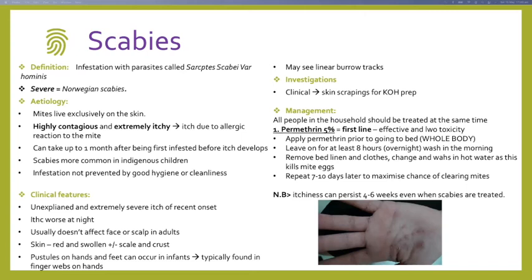Scabies is caused by Sarcoptes scabiei. Highly contagious — spreads person to person. Extremely itchy, particularly at night. Usually doesn't affect the face; mainly found in the webs, palms, genitals, and soles. Take skin scrapings for potassium hydroxide wet mount prep to find scabies burrows, faeces, or the mite itself to confirm diagnosis. Management: permethrin 5% is first-line. Apply to the entire body before bed, sleep with it, wash off in the morning. Remove all clothing and linen, wash in hot water, and repeat the whole process in one week.